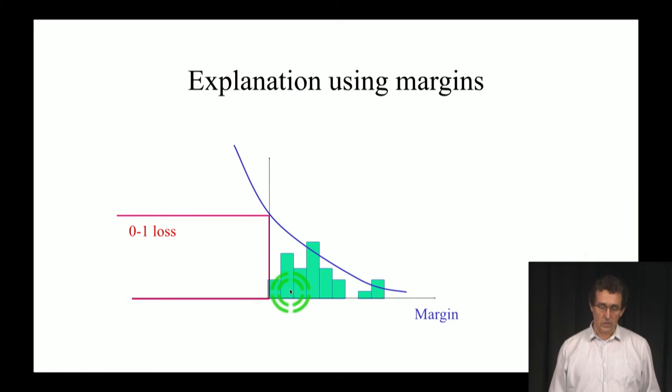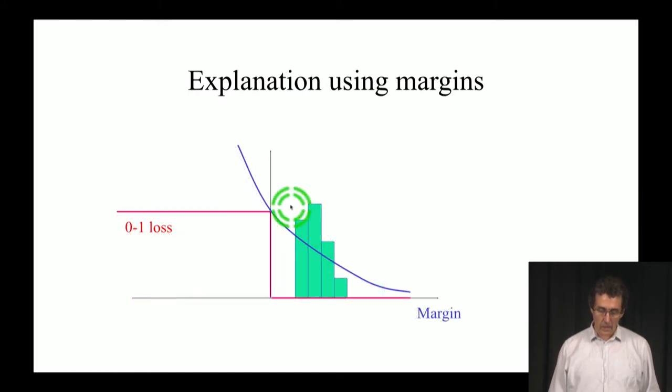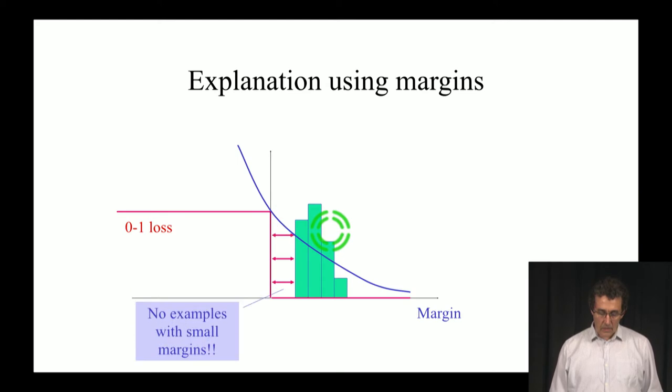But the loss function that boosting is minimizing is this exponential function. It's not this one. Therefore, it's basically just going to push these examples further, further to the right. Later they will be something like this, and what we have here is that we have no examples with small margin. Even though the training error didn't change, the distribution of the margin did change in a significant way, and that, we're claiming, is the reason that we're getting better performance on the test data.